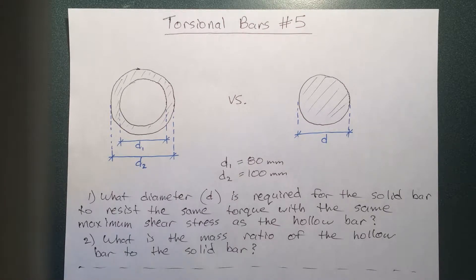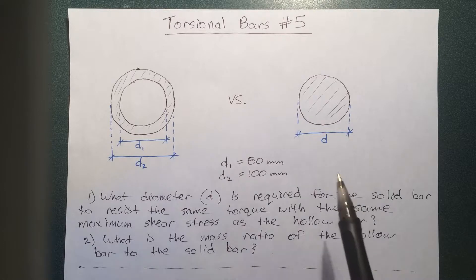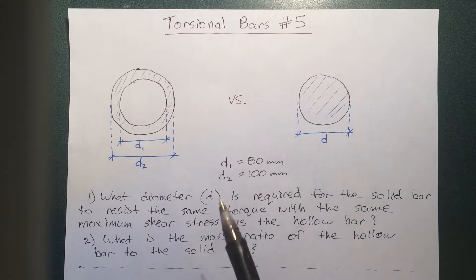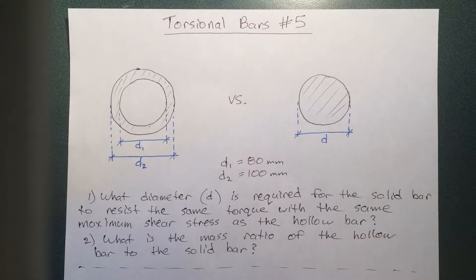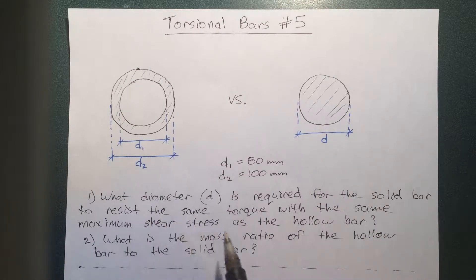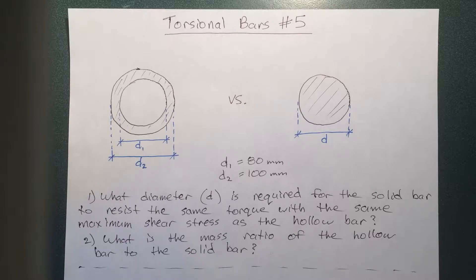Hi everybody. Welcome to my fifth torsional bar video. In this video I'm going to be solving the problem you see here. We're going to determine what the diameter of a solid bar has to be to resist the same torque with the same maximum shear stress as a hollow bar. Then we're going to find the mass ratio of the hollow bar to the solid bar. Feel free to check out any of my other torsional bar videos.